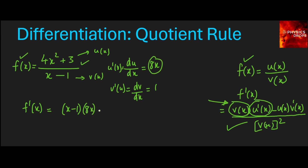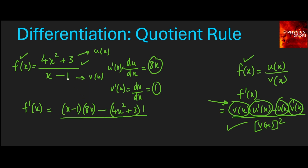Multiply that by 8x, minus u(x) — which is whatever is in the numerator — plus 3, times the differentiation of v(x), v'(x), which is 1. So we just write 1 there. The denominator is v(x) squared — just square whatever is in the denominator of the given function.